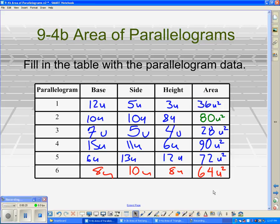Parallelogram 1 has a base of 12 units, a side of 5 units, a height of 3 units, and an area of 36 square units.